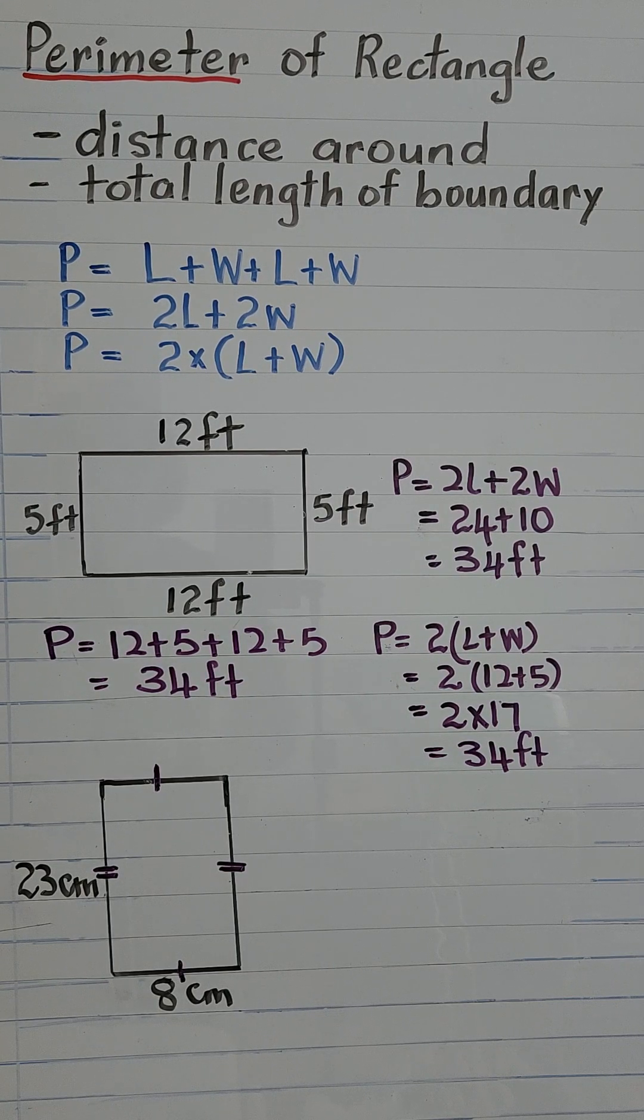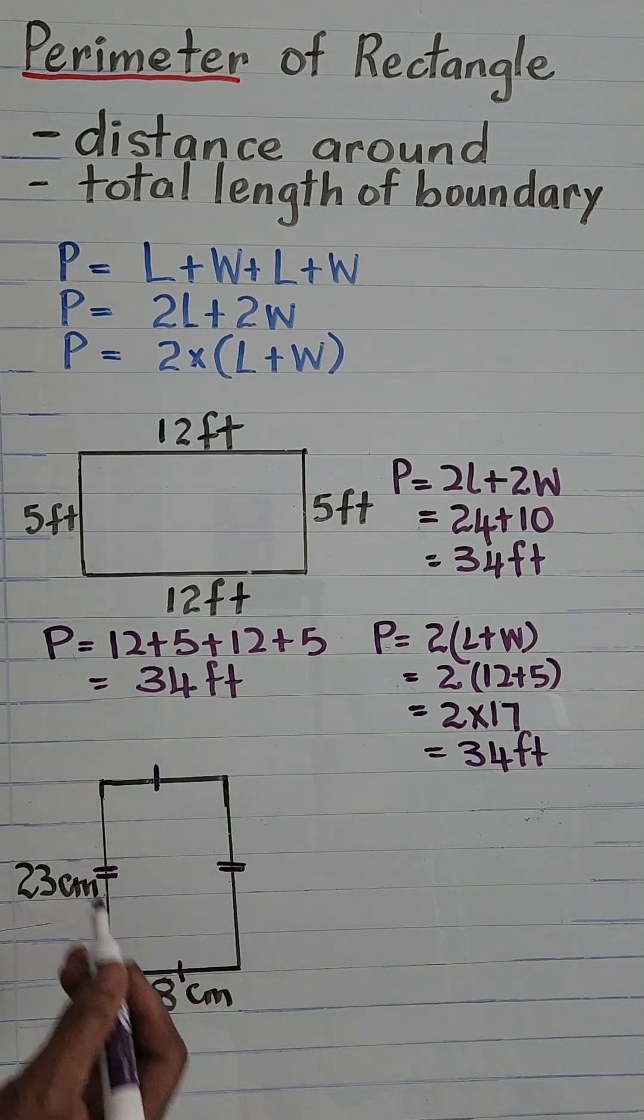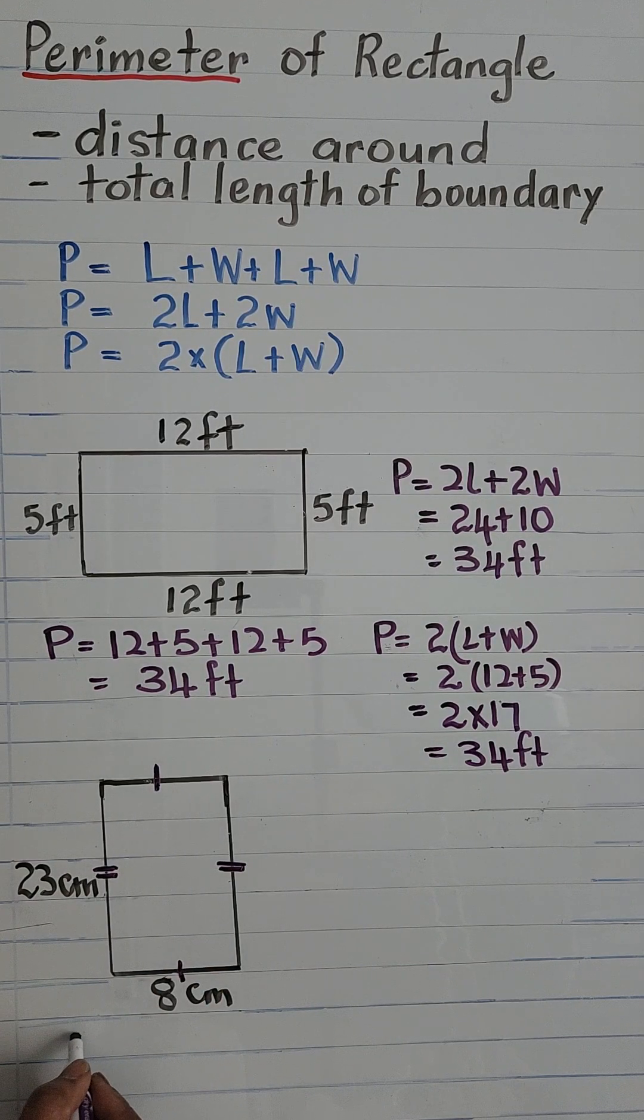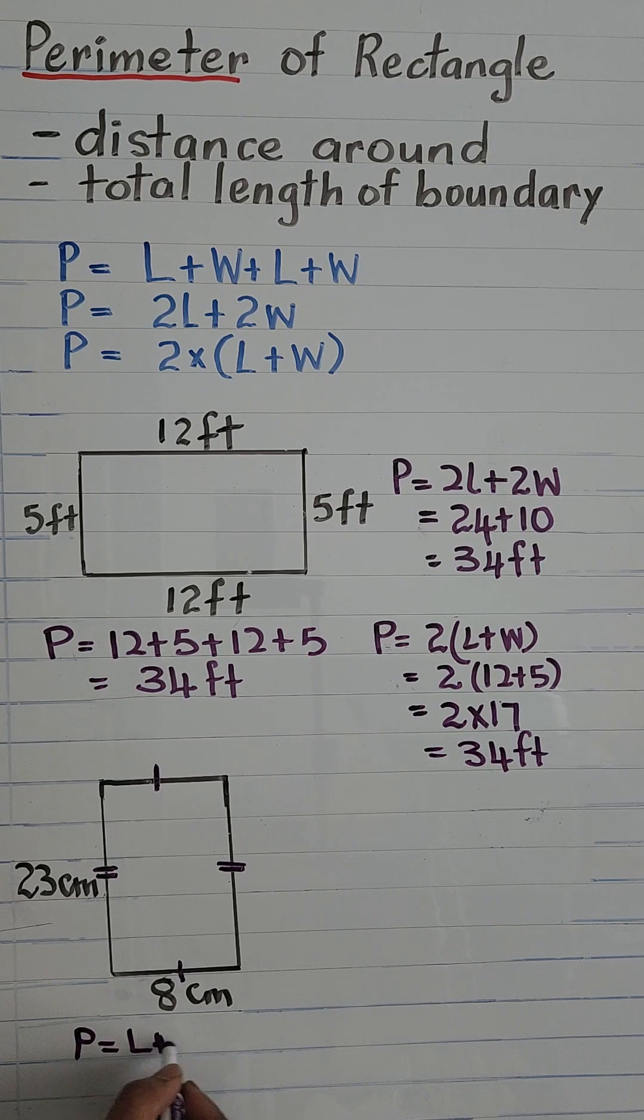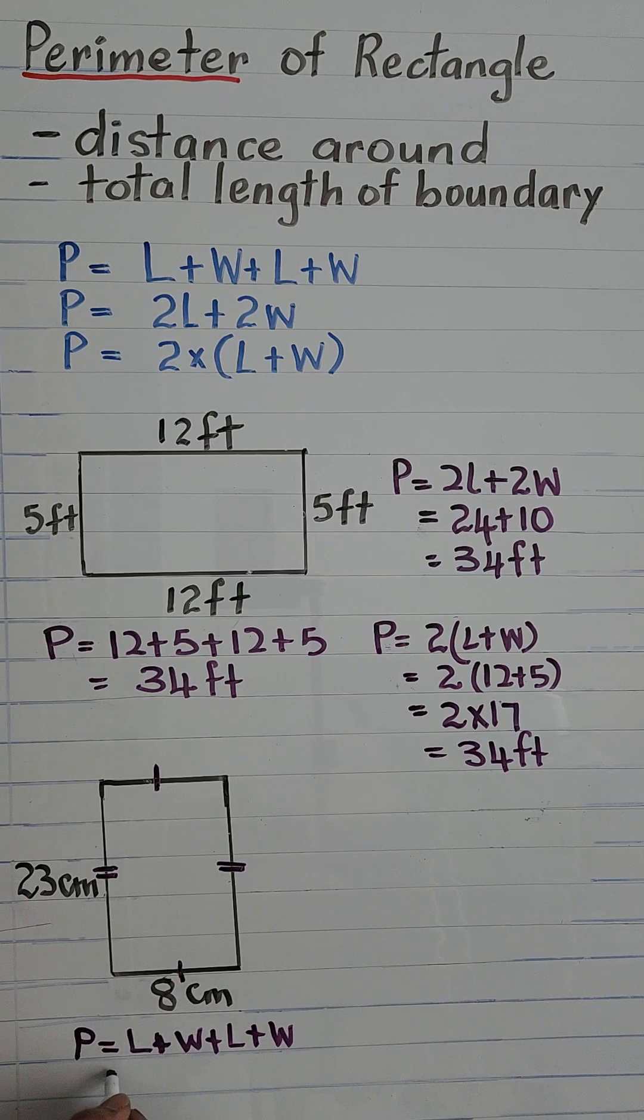So let's go ahead and find the perimeter using the first formula. P equals length plus width plus L plus W, and that is equal to 23 plus 8 plus 23 plus 8.